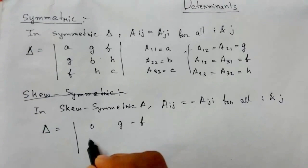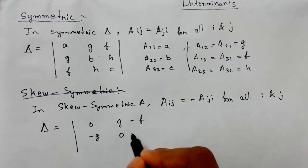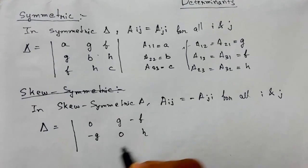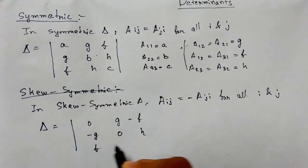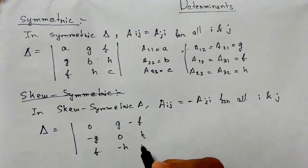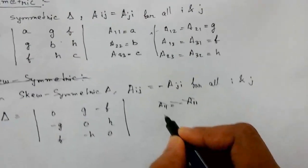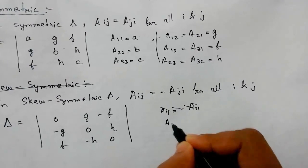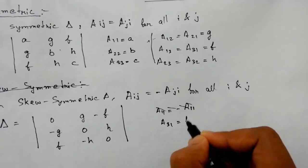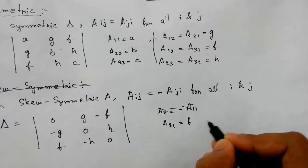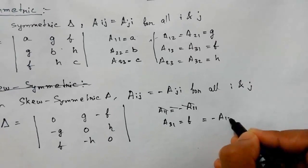So let me take a determinant A. The first row is 0, g, minus f; the second row is minus g, 0, h; the third row is f, minus h, 0. We see here that a31 equals f, which equals minus a13, which is minus f.